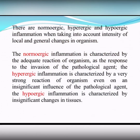The normoergic inflammation is characterized by the adequate reaction of the organism as a response to the invasion of the pathological agent. The hyperergic inflammation is characterized by a very strong reaction of the organism even to an insignificant influence of the pathological agent. And the hypoergic inflammation is characterized by insignificant changes in tissues.